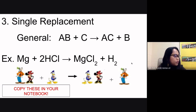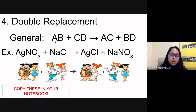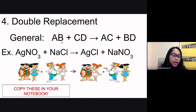The fourth type is double replacement, also called double displacement. This is similar to single replacement, but here you have two compounds that switch partners. The general formula is AB + CD → AC + BD — the two compounds react and exchange their components.